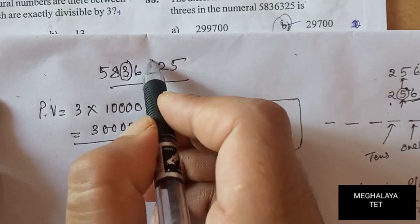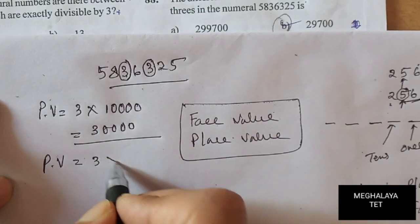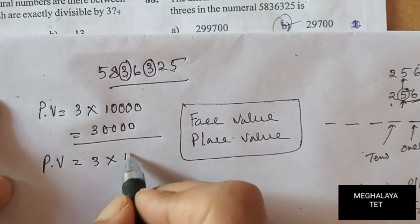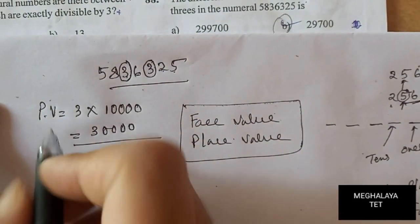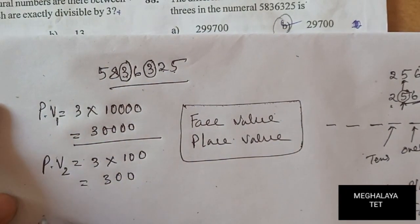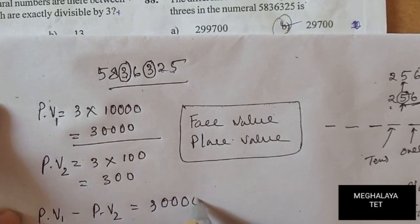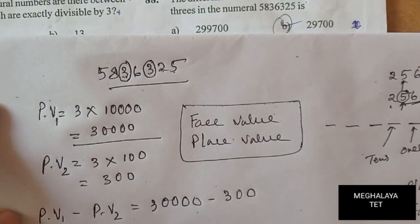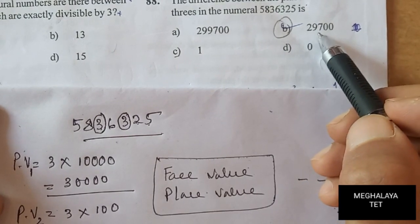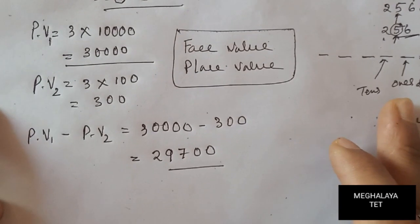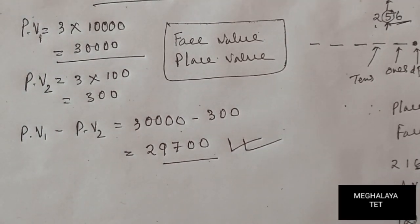For the second 3 (on the right), counting: ones, tens, hundreds — it is in the hundreds place. So PV = 3 × 100 = 300. The difference = 30,000 − 300 = 29,700. So the answer is 29,700, which corresponds to option B. If you have any doubts, please comment. Thanks for watching, bye bye!